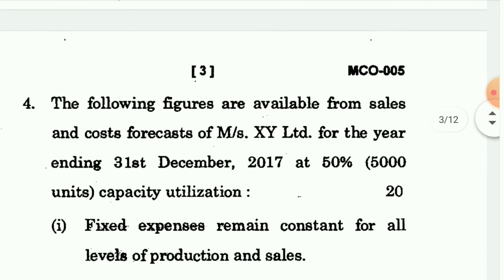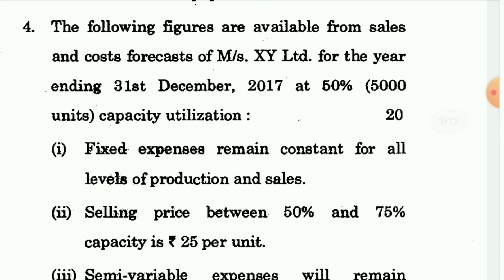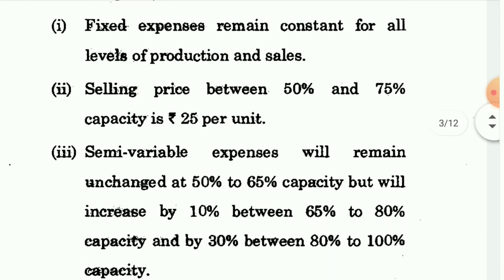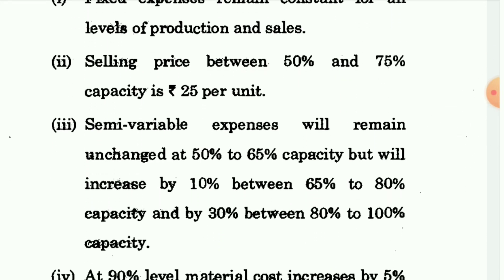Question no. 4: The following figures are available from the sales and cost forecast of ABC Limited for the year ending 31st December 2017 at 50% capacity utilization. At 50% capacity, 5000 units की production होती है। Fixed expenses remain constant for all levels of production. Selling price between 50-75% capacity is 25 per unit. Semi variable expenses will remain unchanged at 50-65% capacity but will increase by 10% between 65-80% capacity and by 30% between 80-100% capacity.